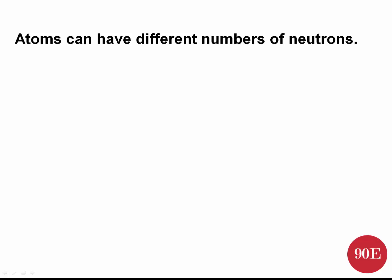Even though atoms will always have the same atomic number, and therefore always the same number of protons, they can have different numbers of neutrons. To work out how many neutrons an atom has, we need to look at its mass number. The mass number is the number of protons plus neutrons — in reality, it's the number of subatomic particles in the nucleus itself.